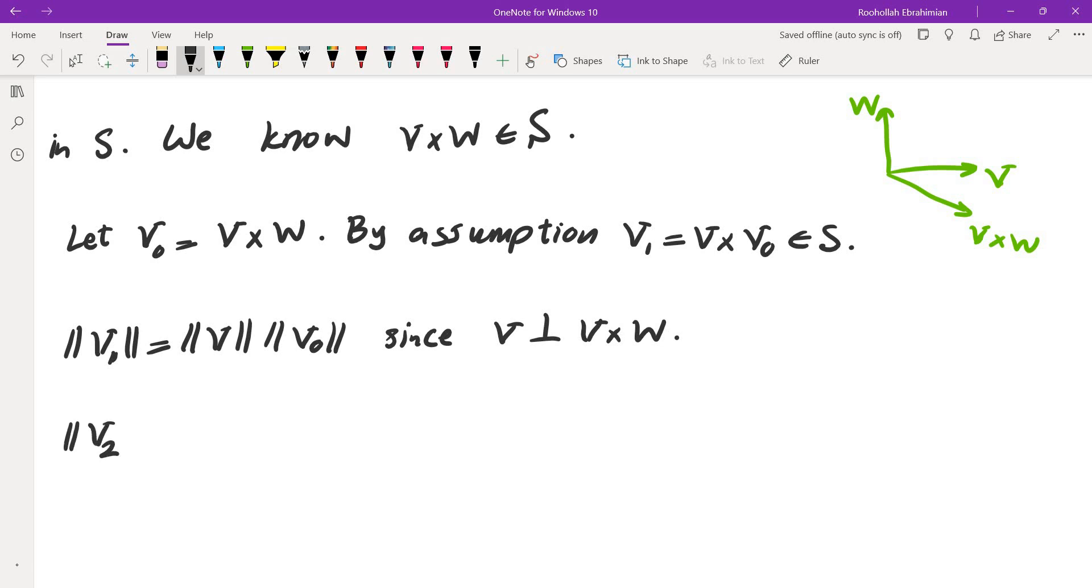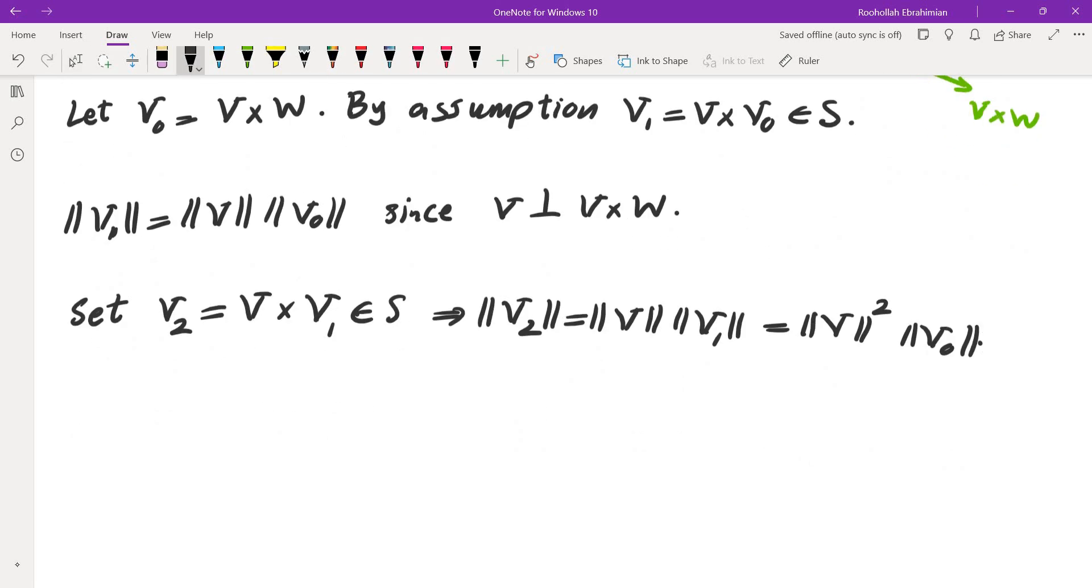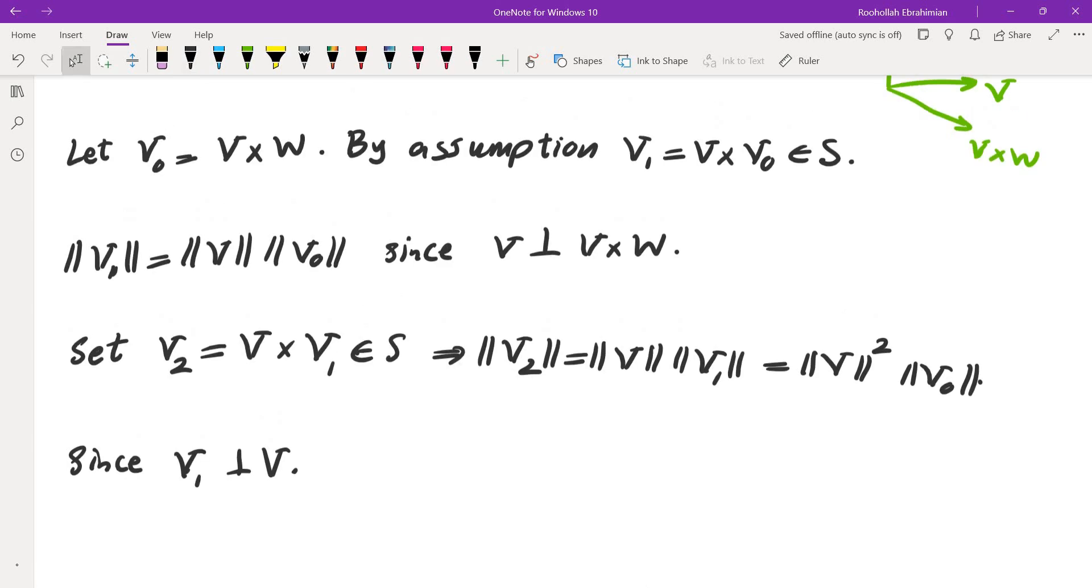Now, we're going to repeat this. Magnitude of V₂, set V₂ equals V cross V₁, which is in S. So magnitude of V₂ is going to be magnitude of V times magnitude of V₁, which is magnitude of V squared times magnitude of V₀. And this is since V₁ is orthogonal to V, because V₁ is V cross V₀.